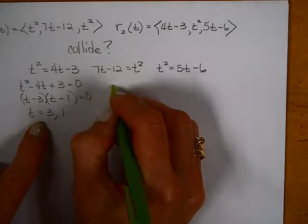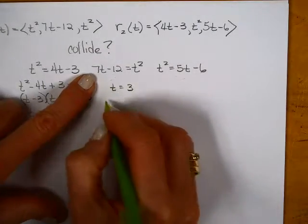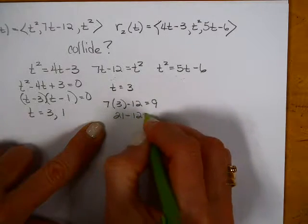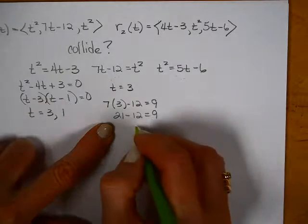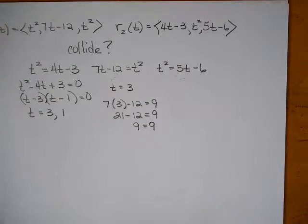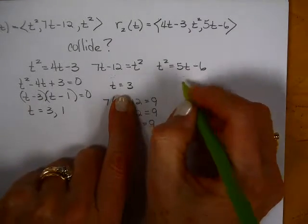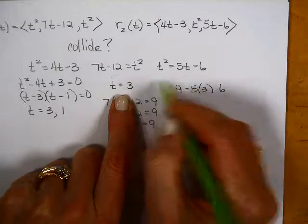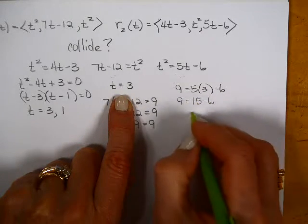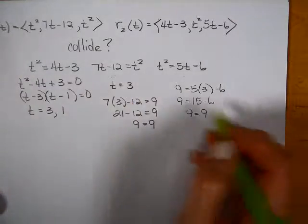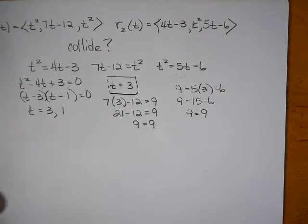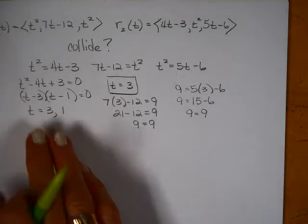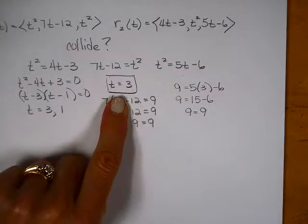Then what I would do is I would take these and see if they work in these two equations. It's got to work for everything. So I would take t is equal to 3. If I put 3 in here, I'm going to have 7 times 3 minus 12. Is that going to be equal to 9? 21 minus 12 does look like it's 9. So t is equal to 3 worked there. Then I would go to the next one. Is t equal to 3 working the next one? So that's going to be 9. Is that equal to 15 minus 6? 9 equals 9. Yes, it looks like t equals to 3 works in everything. So unfortunately, it looks to me like they're going to collide. I don't have to go any further. If they collide once, it doesn't matter if they collide a second time.